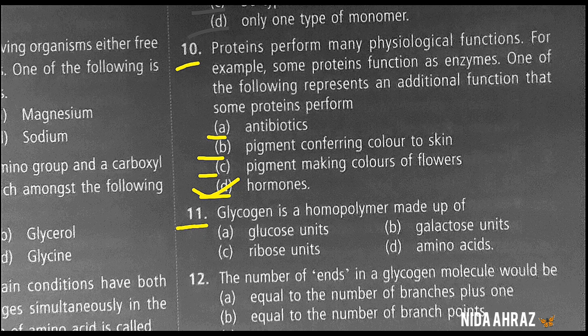Glycogen is a homopolymer made up of: glucose units, galactose units, ribose units, or amino acids. The correct choice is option A — glucose units.